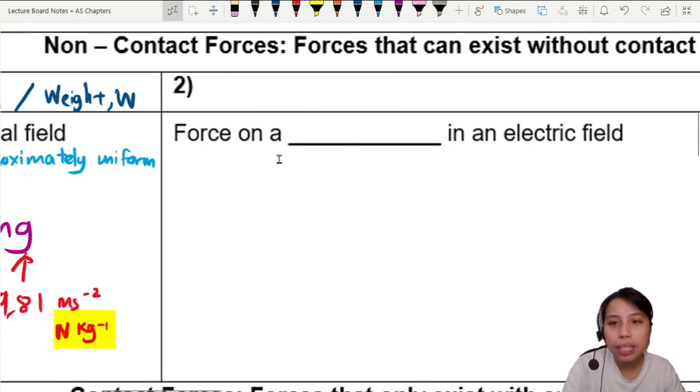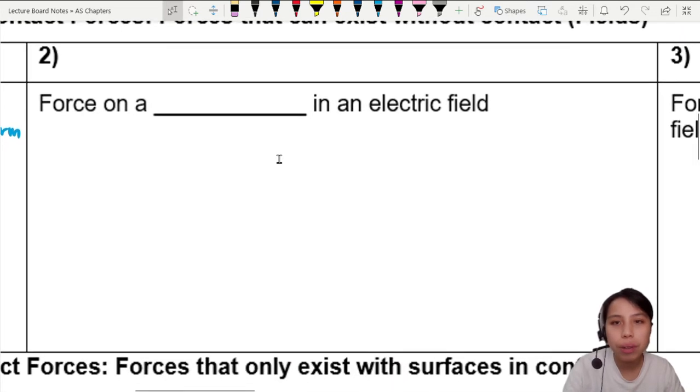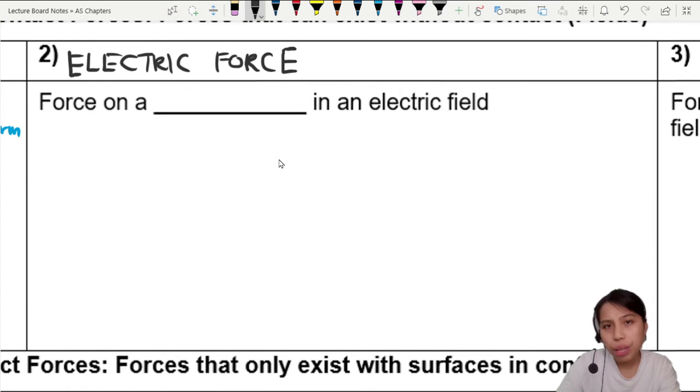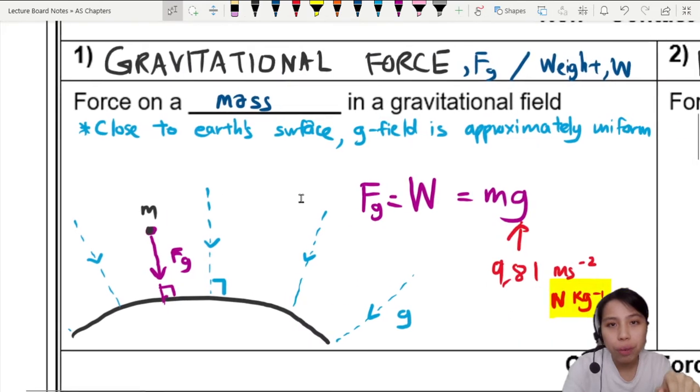Next force is called the electric force. Let's go over to the next box here that doesn't need to touch to act on you. Sometimes we call it electrostatic force, but generally just electric, and we use a symbol Fe.